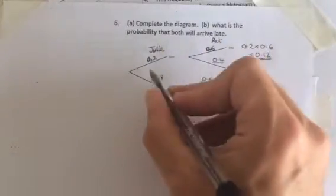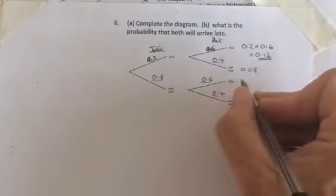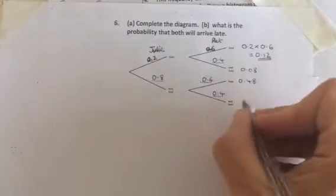It is well worth working out the rest of these. This one would be 0.2 times 0.4, which is 0.08. This one is 0.8 times 0.6, which is 0.48, and this is 0.8 times 0.4, which is 0.32.